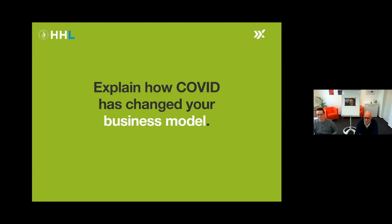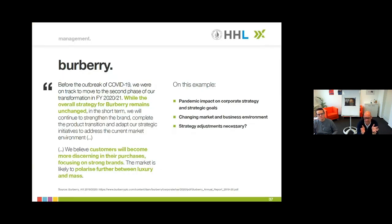Let's start with the business model as part of our management perspective, and I start with Burberry. The interesting thing for Burberry is that they first say their strategy is unchanged — and this is very important information. The next thing is that they talk about the adjustments that are made or have to be made based on the pandemic. Definitely there have to be adjustments, but not every company will stay with its strategy — that has to be mentioned. The impact on corporate strategy and the strategic goals has to be mentioned in an understandable way.